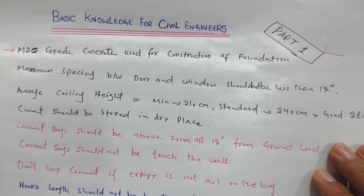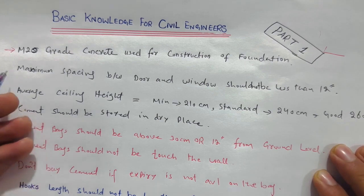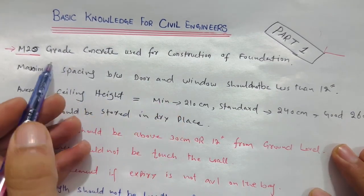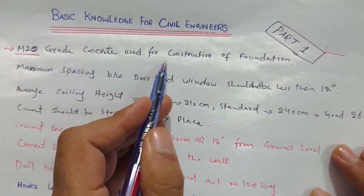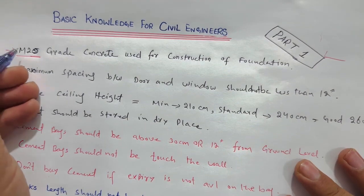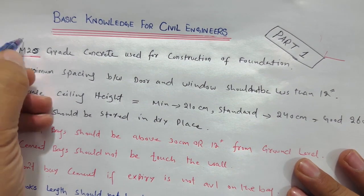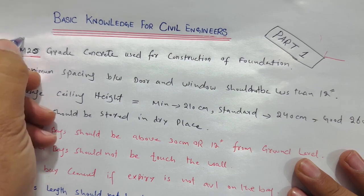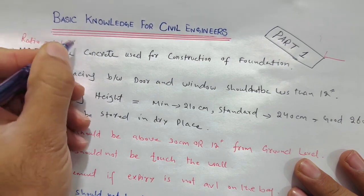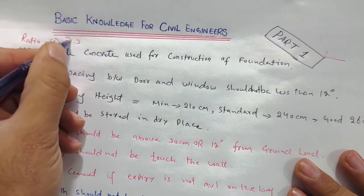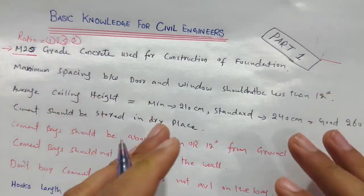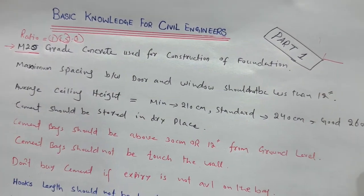This is part one, and in the next video I will guide you for part two and three. The first topic is M20 grade of concrete. M20 grade concrete is used for the construction of foundations, because foundation is the main part of a building. The ratio of M20 concrete is 1:1.5:3 — one part cement, 1.5 parts sand, and three parts crushed aggregate. You can also use it for plinth beam, floor beam, and slab construction.